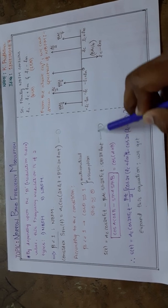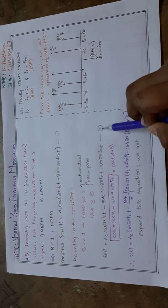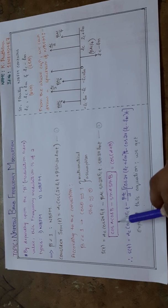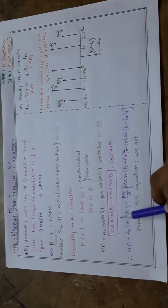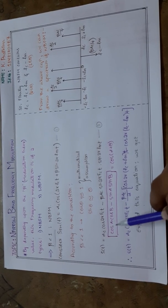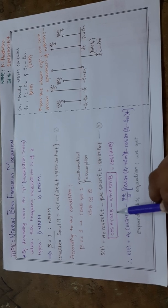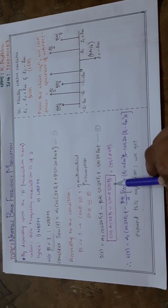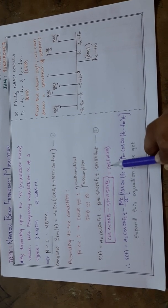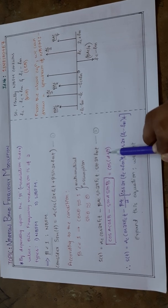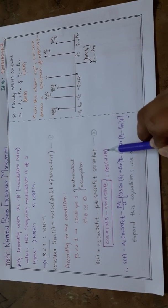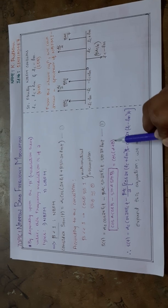Now we have to consider equation 2. If we clearly observe this equation, we can notice that it is in the form of cos a cos b - sin a sin b, which equals cos(a + b). This is one of the trigonometric formulas we can use.